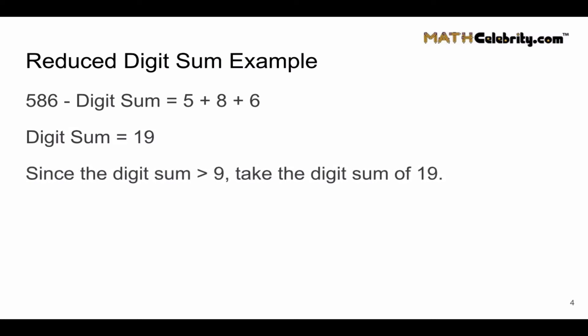Now if we add the two digits in the digit sum, 1 and 9, it's greater than 10. And so our reduced digit sum says if the digit sum is greater than 9, we've got to do the digit sum again. So now we're going to take the digit sum of 19: 1 plus 9 equals 10.